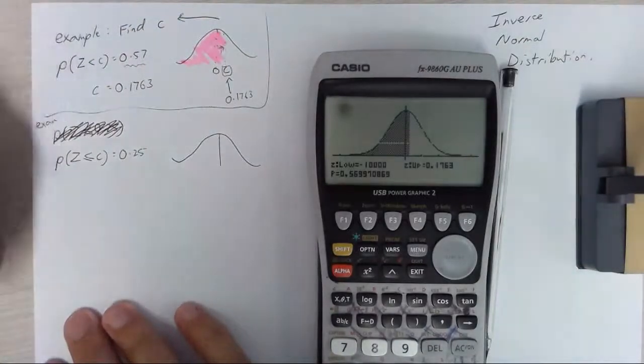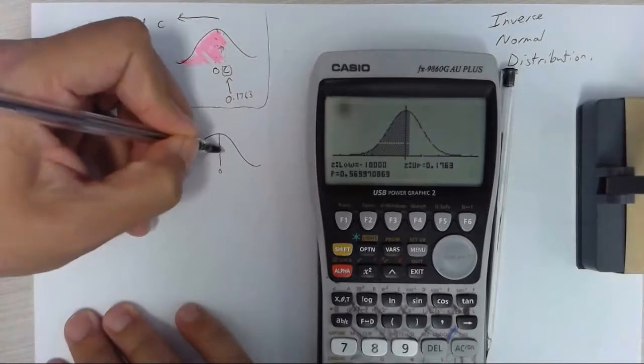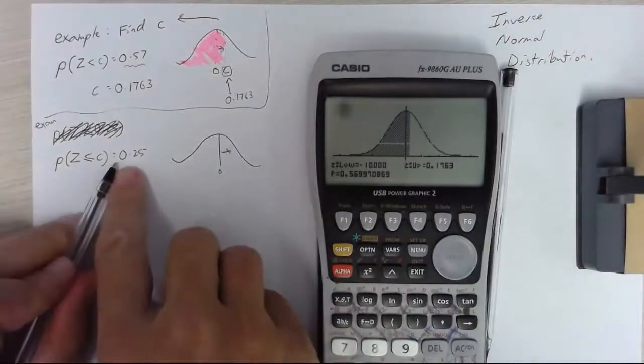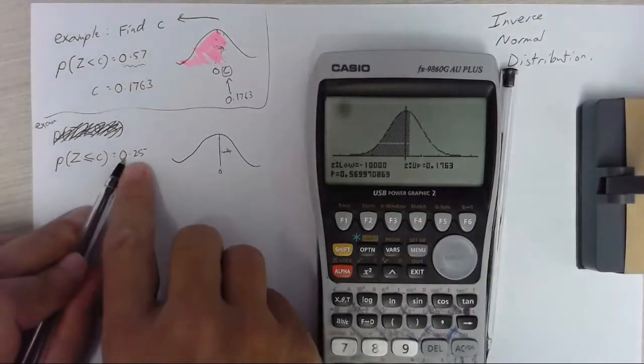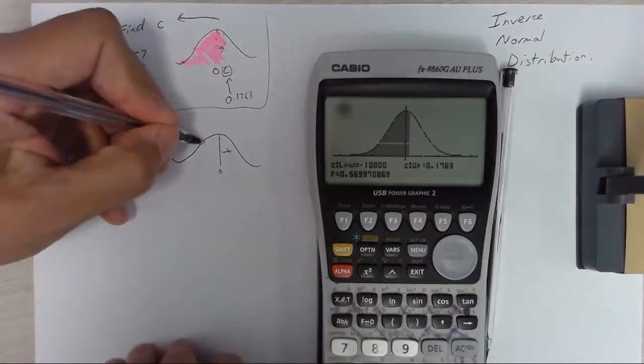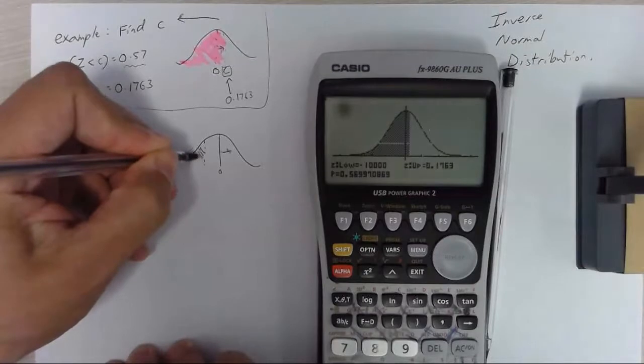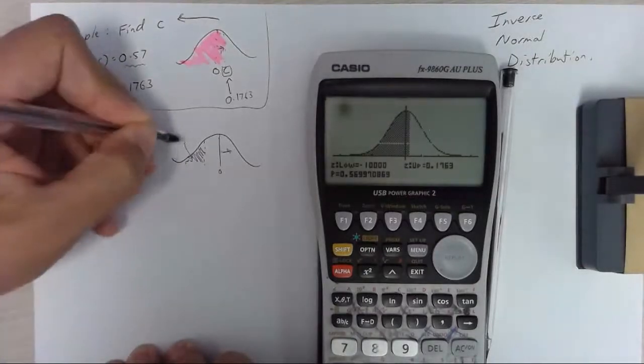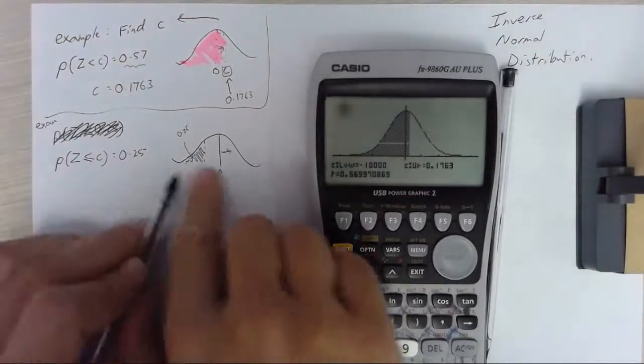normal distribution, standard normal, so 0, 0, 1, is that the probability is less than 0.5. So z is less than c equals 0.25. So that area there is going to be 0.25.